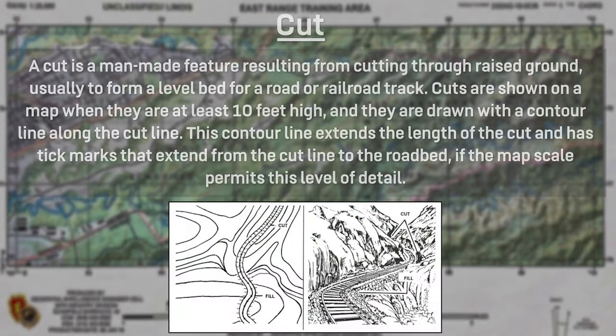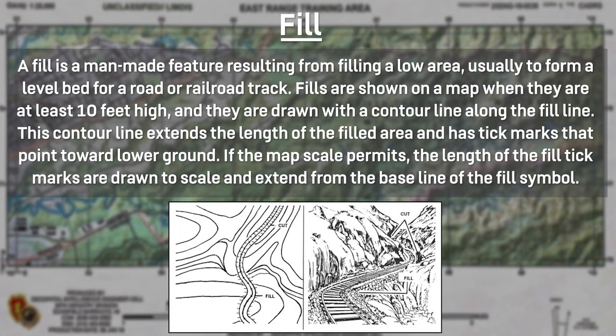There are two supplementary terrain features: cuts and fills. A cut is a man-made feature resulting from cutting through raised ground, usually to form a level bed for a road or railroad track. Cuts are shown on a map when they are at least 10 feet high, drawn with a contour line along the cut line that has tick marks extending from the cut line to the road bed. A fill is a man-made feature resulting from filling a low area, usually to form a level bed for a road or railroad track. Fills are shown when they are at least 10 feet high, with a contour line along the fill line and tick marks pointing toward the lower ground, drawn to scale if the map scale permits.